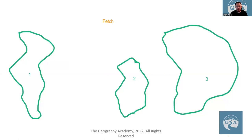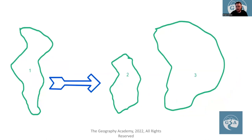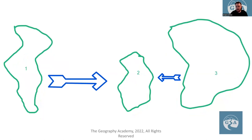The first concept is fetch. We're going to imagine these are three islands — one, two, and three. The distance between island one and two is quite a lot larger than the distance between island three and two. Because of this, the distance between one and two would have a greater fetch, which means that a greater amount of wind can pass over the water and build up energy, transferring it into wave energy.